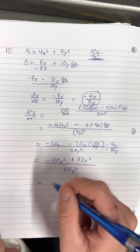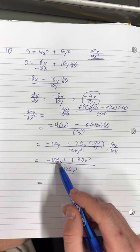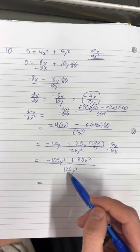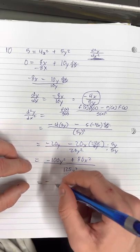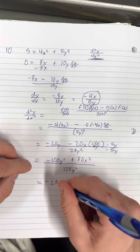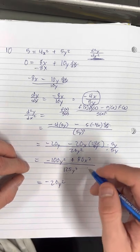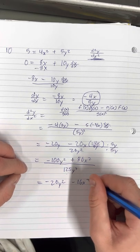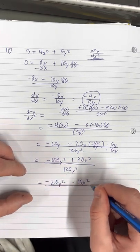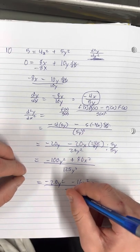Simplifying this a little bit more, you can factor out 5 from each term. 5 out of 100 is 20, so it's negative 20y squared. 5 out of 80 is 16, so that's 16x squared. And 5 out of 125 is 25, so we get 25y to the third.